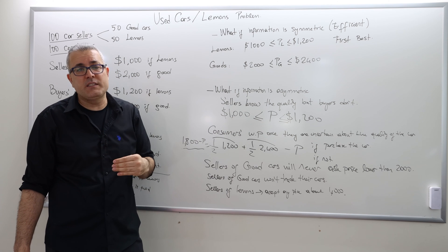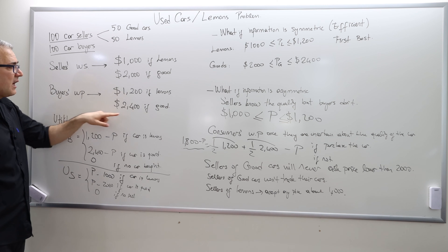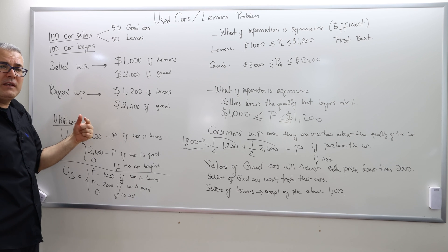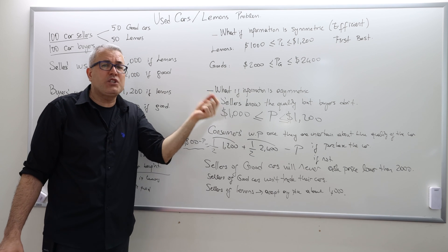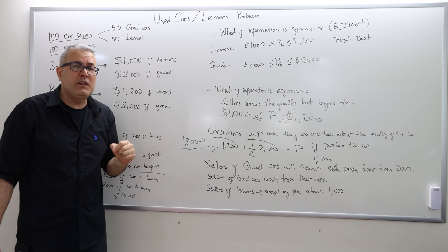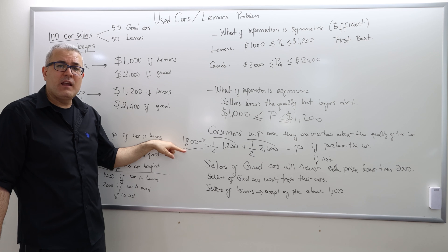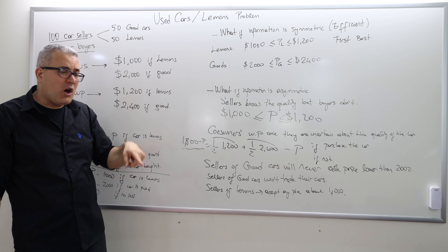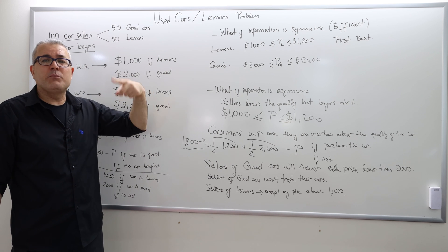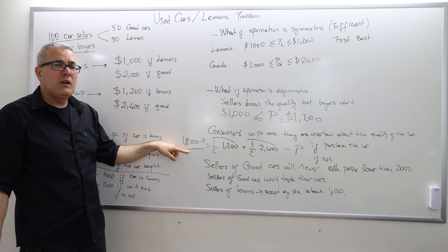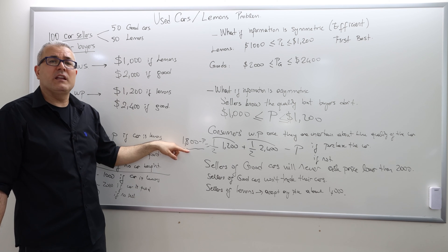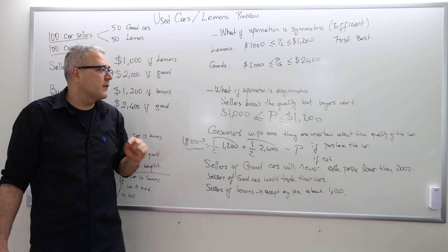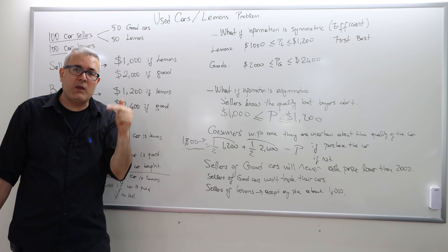This is clearly inefficient. Why? Because the buyers are actually willing to pay $2,400 for a good car, but the problem is they can't understand which car is which, and that negatively influences their willingness to pay. This decreased price caused them to further update their beliefs — at $1,800 or below, no good car owners will sell, so it must be only lemons. And so they are going to decrease the price even further — their willingness to pay will decrease even further.